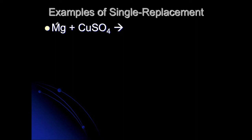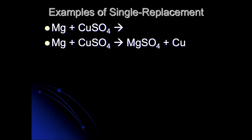Here's an example: magnesium plus copper sulfate. Magnesium is going to take the place of the copper. Magnesium will have a plus two charge as an ion and will take the place of the positive ion in the compound, which is copper — positive will replace positive, negative will replace negative. So we get magnesium sulfate and copper by itself. Copper is plus two and sulfate is minus two. Magnesium as an ion is also a plus two, and sulfate is a minus two, so there are no subscripts needed — they balance each other out.